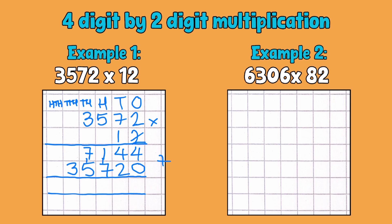Because I partitioned my 10 and my 2, I need to put those back together to make 12. So I'm going to add these two answers up — that will put everything back together perfectly and give you the final answer. 4 add nothing is 4, 4 add 2 is 6, 1 add 7 is 8, 7 add 5 is 12 — unit down, carry the 10 — and nothing add 3 add 1 is 4. So we have 42,864.